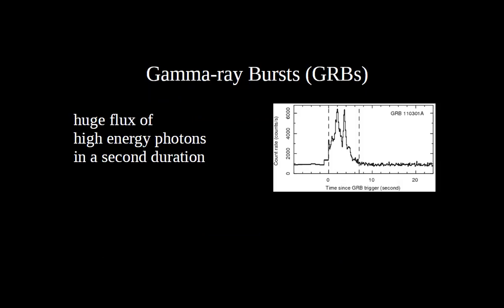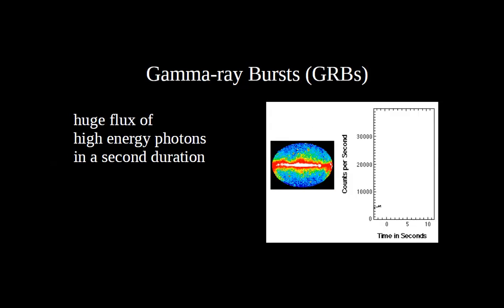This is a gamma ray burst light curve from the 90s. We see a huge flux of high energy photons — at trigger time zero the flux goes up for almost seven to eight seconds, showing a double peak. When a GRB is triggered, the whole gamma ray sky goes blind and only the burst can be seen.